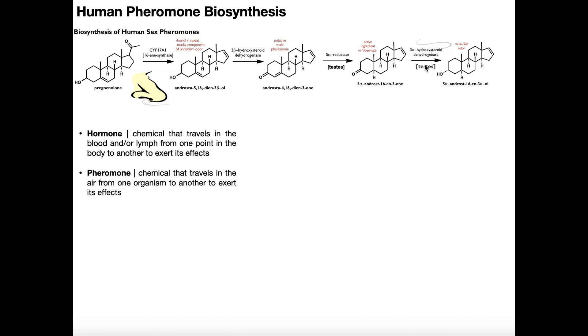Also in the testes, there's another enzyme here, 3-alpha hydroxysteroid dehydrogenase, which can actually take this double bond right here, this carbonyl, it's actually a ketone, and reduce it to an alcohol. This forms 5-alpha androstenol. Now 5-alpha androstenol is less active than 5-alpha androstenone.